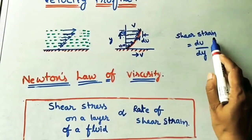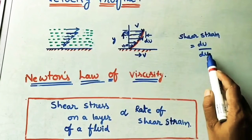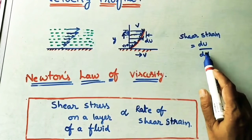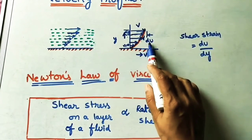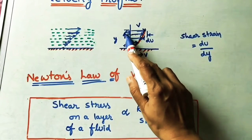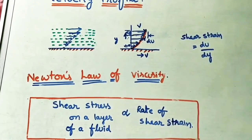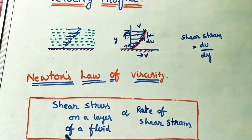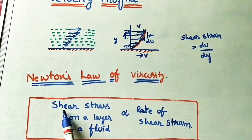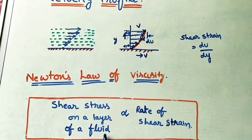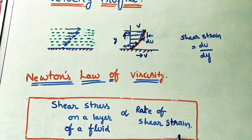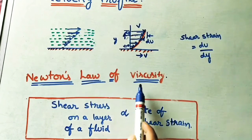The rate of shear strain is equal to the change in velocity with respect to distance, du/dy. According to Newton's law of viscosity, the shear stress on a layer of fluid is proportional to the rate of shear strain. This is Newton's law of viscosity.